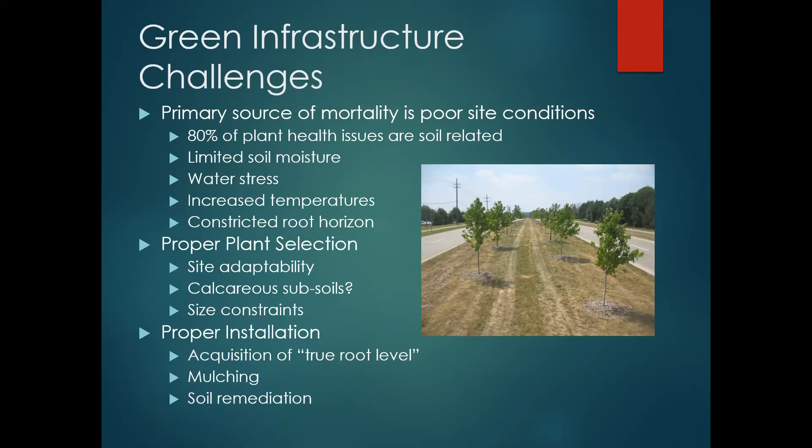When we look at green infrastructure, we look at the challenges that face us in both urban and suburban areas — basically the challenges on disturbed soils. When we think about mortality of trees in these areas, 80% of plant health issues are soil related. We're primarily dealing with subsoils — topsoils and A horizons have been stripped off. We're dealing with poor drainage in many cases, severe compaction, and these soil-related issues have a negative impact on trees as they establish. Limited soil moisture, water stress — both too much and not enough — increased temperatures, and restricted root horizons all affect how a tree establishes. Plant selection must focus on site adaptability.